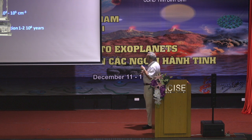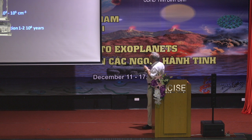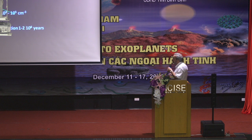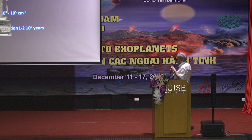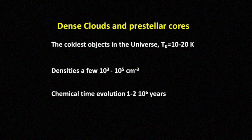When we move to dense clouds and prestellar cores, we are dealing with the coldest objects in the universe. Temperatures are around 10 to 20 Kelvin, densities 10^3 to 10^5, and the chemical evolution timescale is typically 1 to 2 million years.